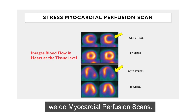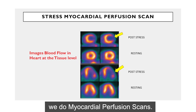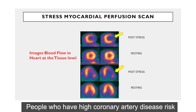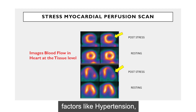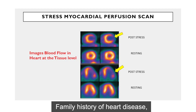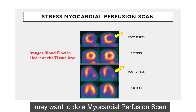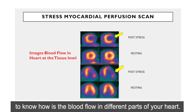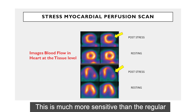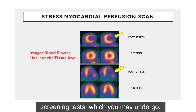For the heart, we do myocardial perfusion scans. People who have high coronary artery disease risk factors like hypertension, family history of heart disease, or diabetes — the cardiologist may want to do a myocardial perfusion scan to know how is the blood flow in different parts of your heart, which is much more sensitive than the regular screening tests which you may undergo.